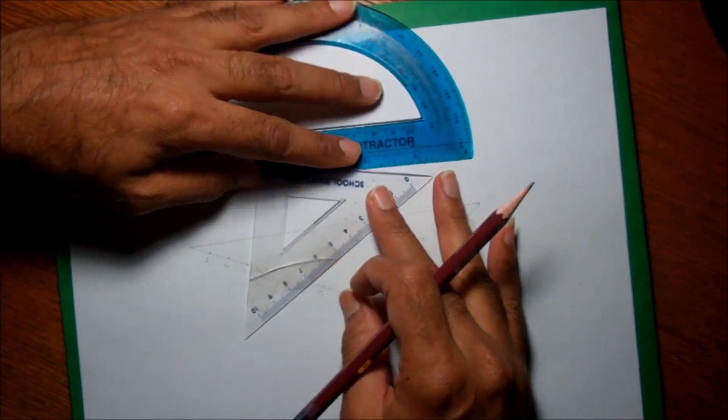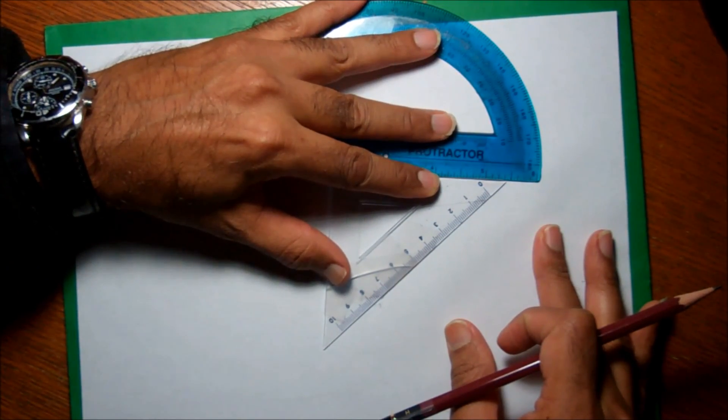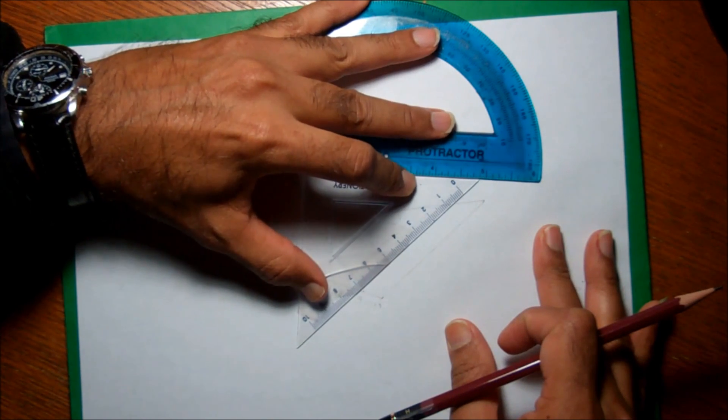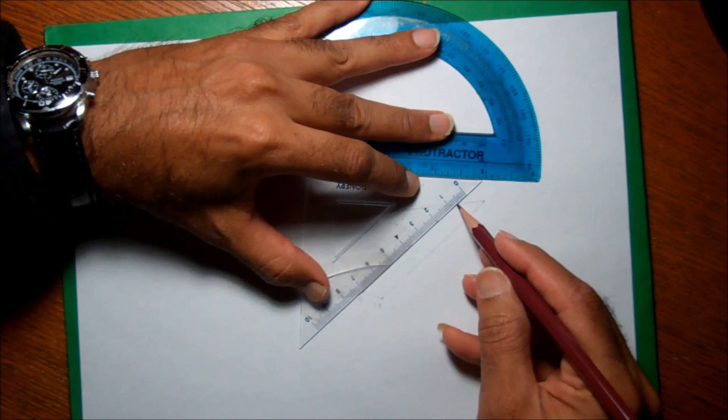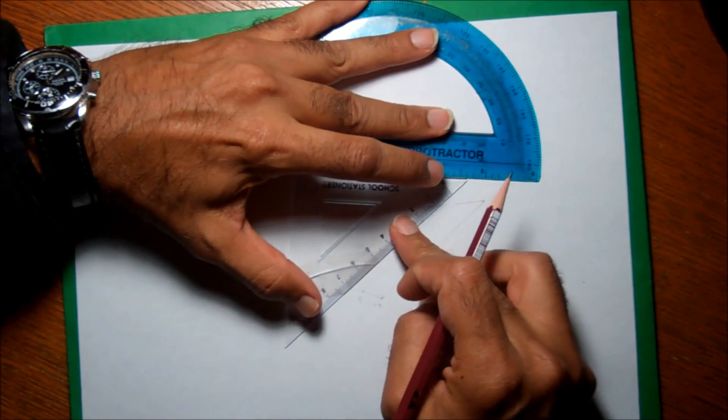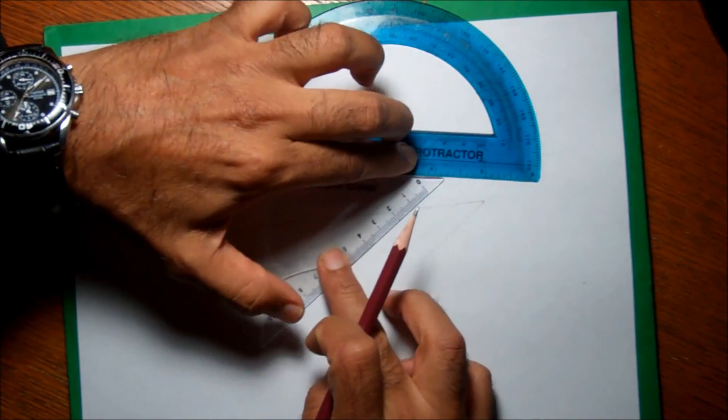So by doing that I can divide this line into 10 centimeters. So this is the one. Now at the 9 centimeter I'm going to draw another line, and now again at the 8.